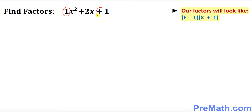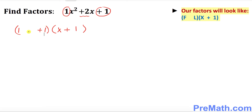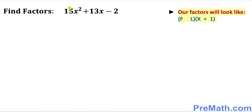In this example our first number is 1, the last number is positive 1. 1 plus 1 always gives you positive 2, so that means our factor is going to be — first always put down x plus 1 in the second parentheses. Here your first number is 1, the last number is positive 1, and you always put x next to the first number. These are your factors.